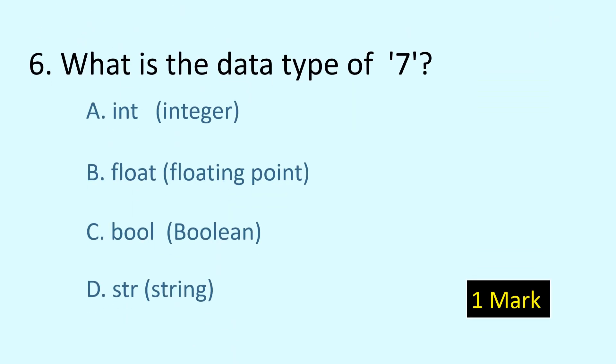Next question: what is the data type of '7' within quotation marks? The options are int, float, bool, or string, and the answer is string. Anything within single or double quotation marks is a string.